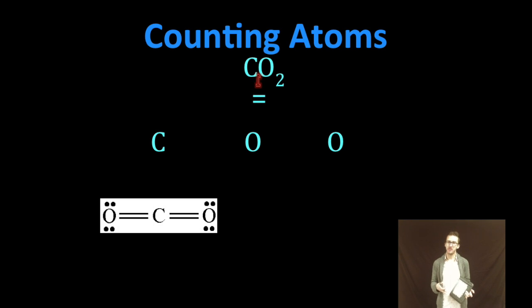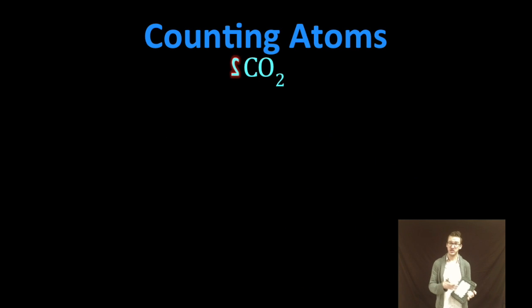Keep in mind with the covalent compounds, we aren't ripping electrons away to form ions. Those electrons are being shared to form discrete molecules. So we don't have the lattice, again, discrete individual molecules in those covalent compounds. Again, you're going to start seeing coefficients added in front of covalent compounds as well.